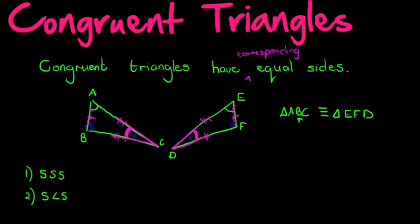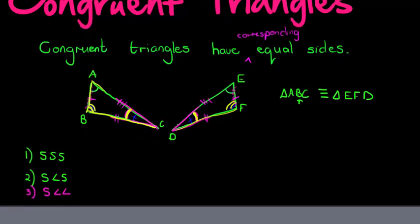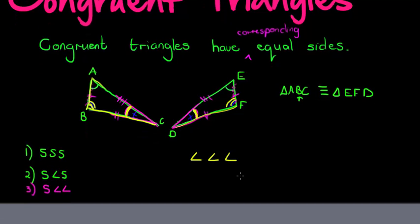If I don't have the inclusive angle, I need one side and any two angles. So I might have two angles — showing these two angles are the same and those two angles are the same — but that doesn't mean they're congruent yet. I still need one more side. It can be any side, as long as I can show that this length and that length are the same. So: one side and any two angles.